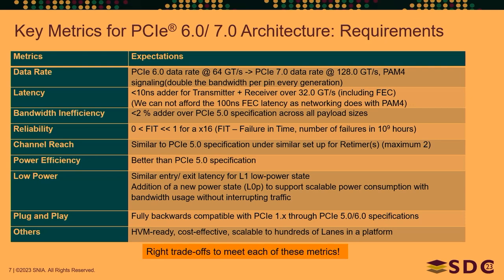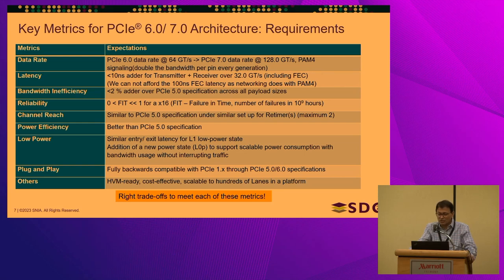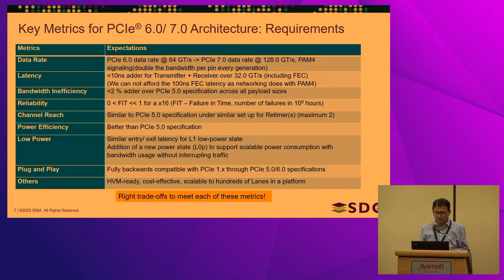Plug and play, fully backward compatible — we talked about it. And high volume manufacturing readiness is critical. These are going to scale to hundreds of thousands, probably millions of systems per year, with hundreds of lanes per platform. None of these metrics are really negotiable — we need the right trade-offs to meet each and every one of them.